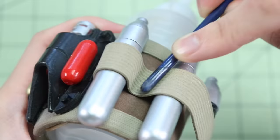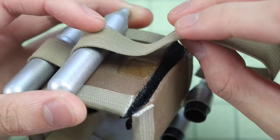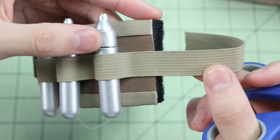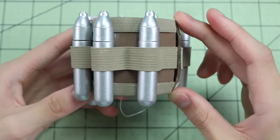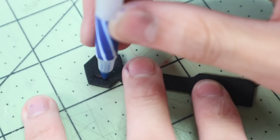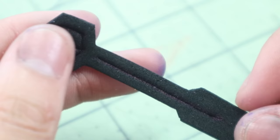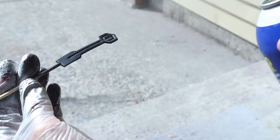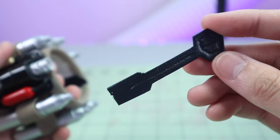The last part of this build is the trigger, which you can also find on the template. The easiest way I found to make the trigger is just to cut it out of craft foam, then imprint the design onto foam using a ballpoint pen. This is kind of optional, but if you want, you can spray a couple coats of black Plasti Dip, and that will give it a more accurate texture.